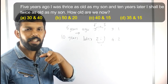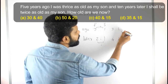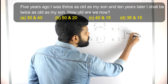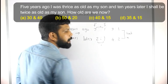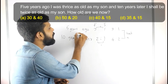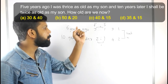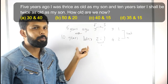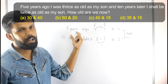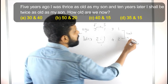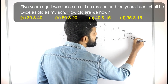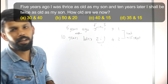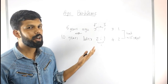This is the unit difference. The difference between the ratios is 1 unit. That 1 unit corresponds to the gap between the two time periods. 5 years ago plus 10 years later gives a span of 15 years. So 1 unit equals 15 years.